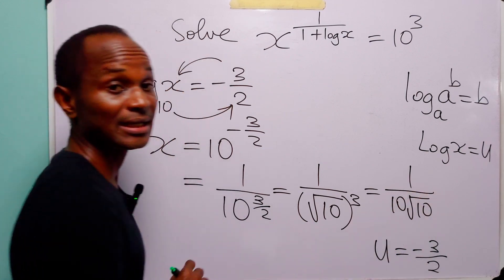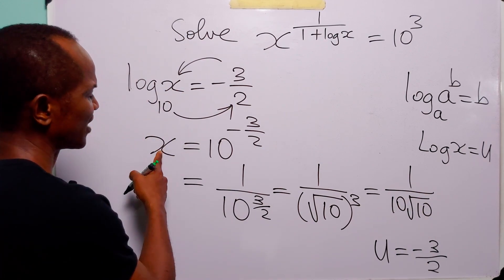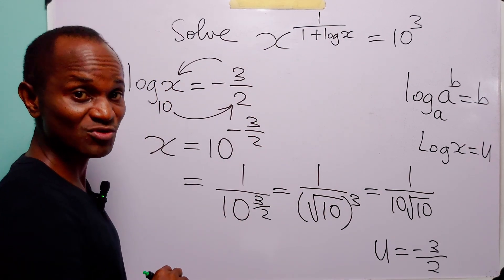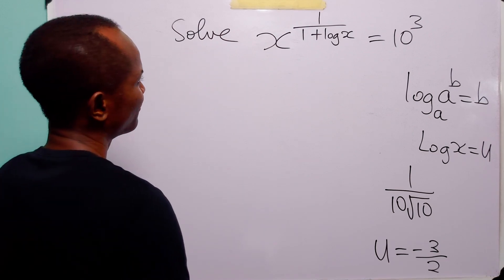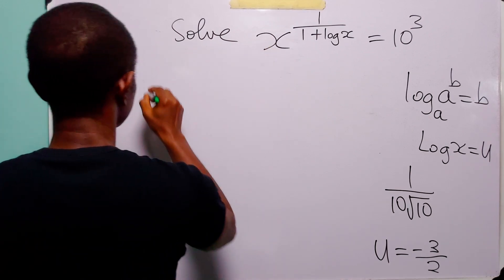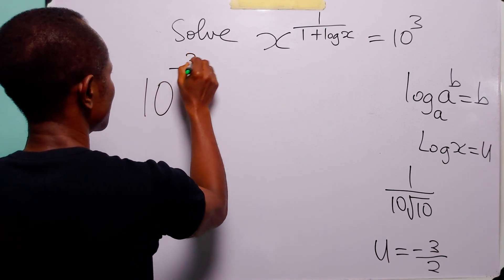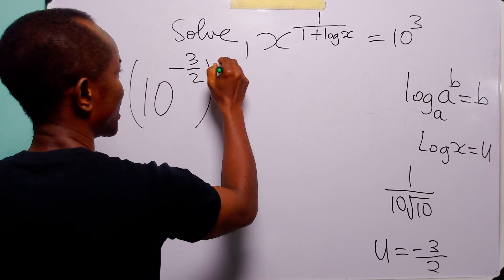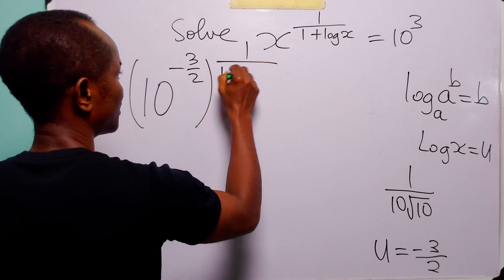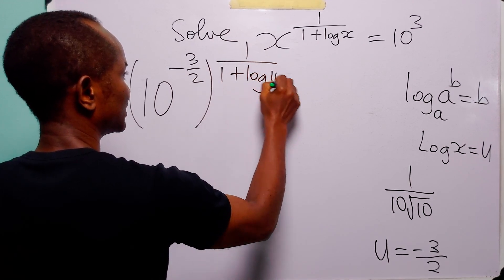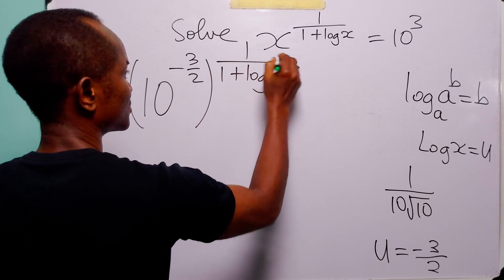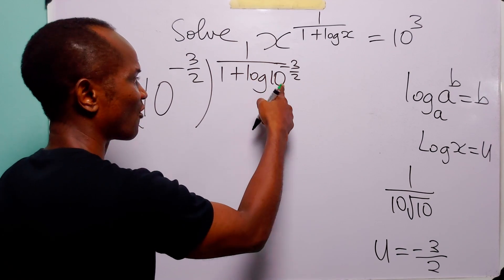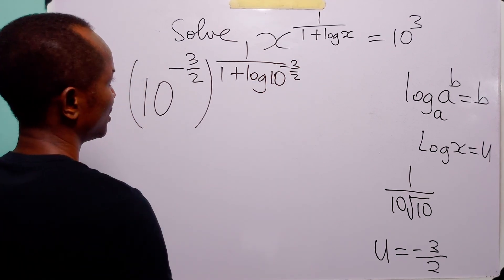Now that we have gotten the value of x that apparently satisfies this equation, let us check whether it really satisfies the equation. We have x equal to 10 to the power minus 3 over 2, and this is raised to the power 1 over (1 + log 10 to the power minus 3 over 2). Remember this is log base 10 of 10 to the power minus 3 over 2.